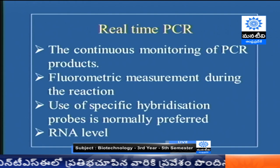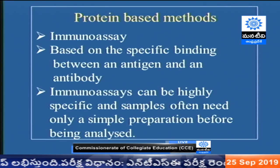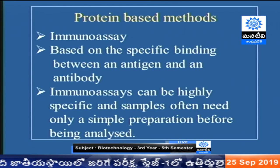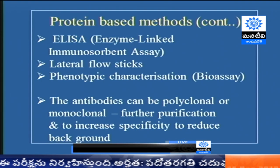Up to this point we have discussed DNA-based methods using polymerase chain reaction. At the RNA level, we can identify the gene using northern blotting. Then there are protein-based methods. In general, we use immunoassays for protein-based methods. There will be an antibody and antigen — when there is a reaction between antigen and antibody, it gives a color by adding colorless reagents that produce colored products. We can then estimate the amount of protein present in the sample. The protein is transcribed and translated from the target gene. These immunoassays can be highly specific and samples often need only simple preparation.